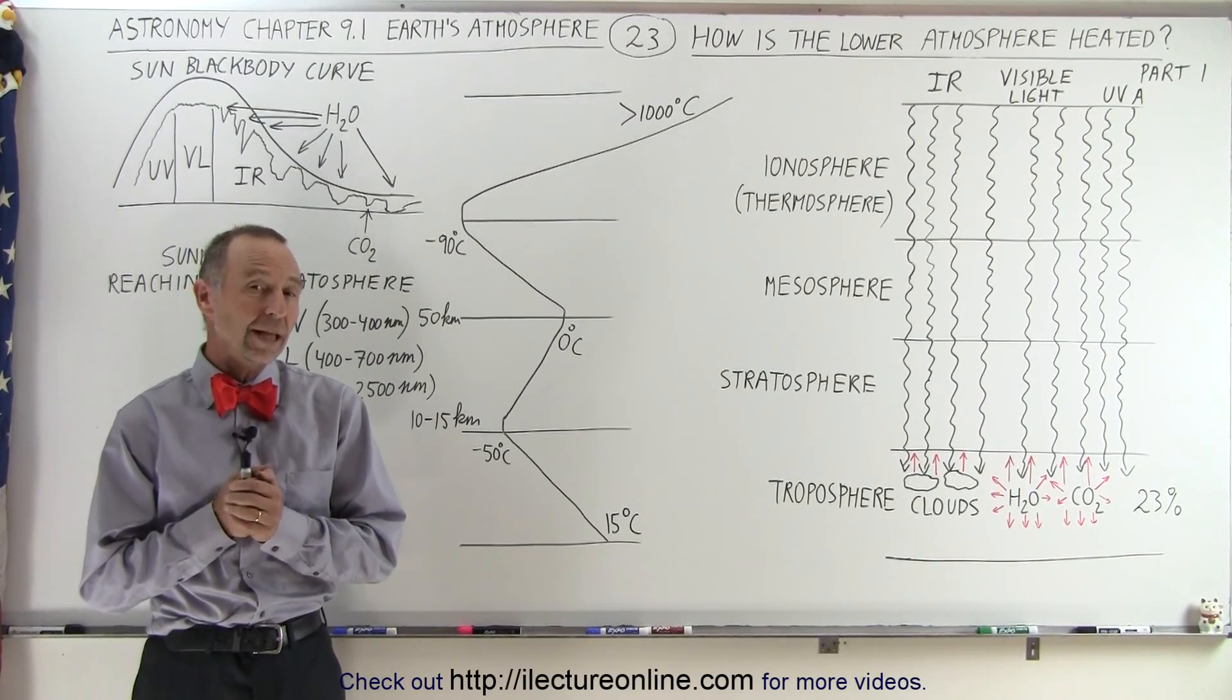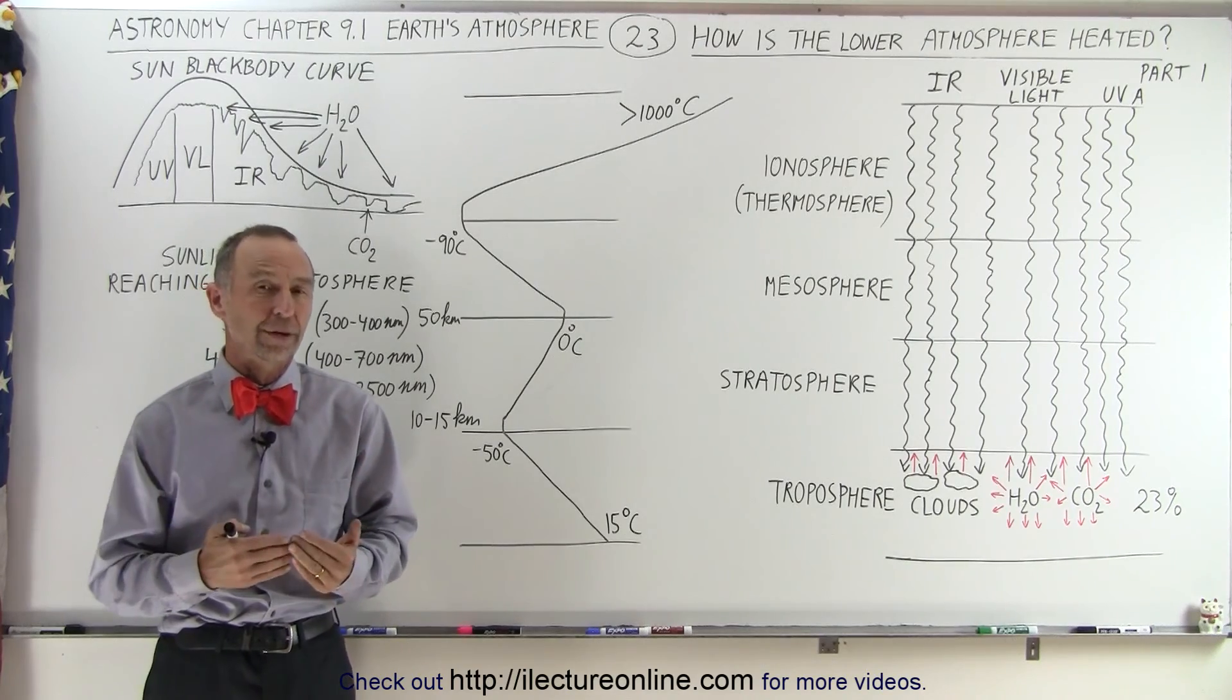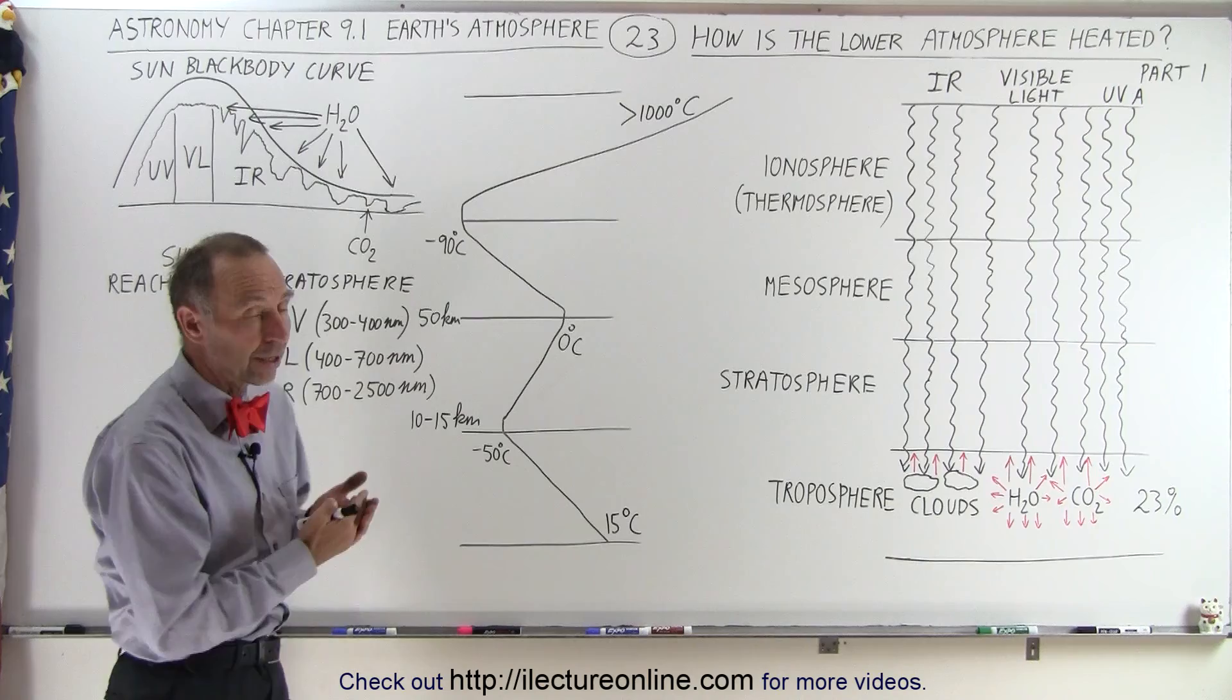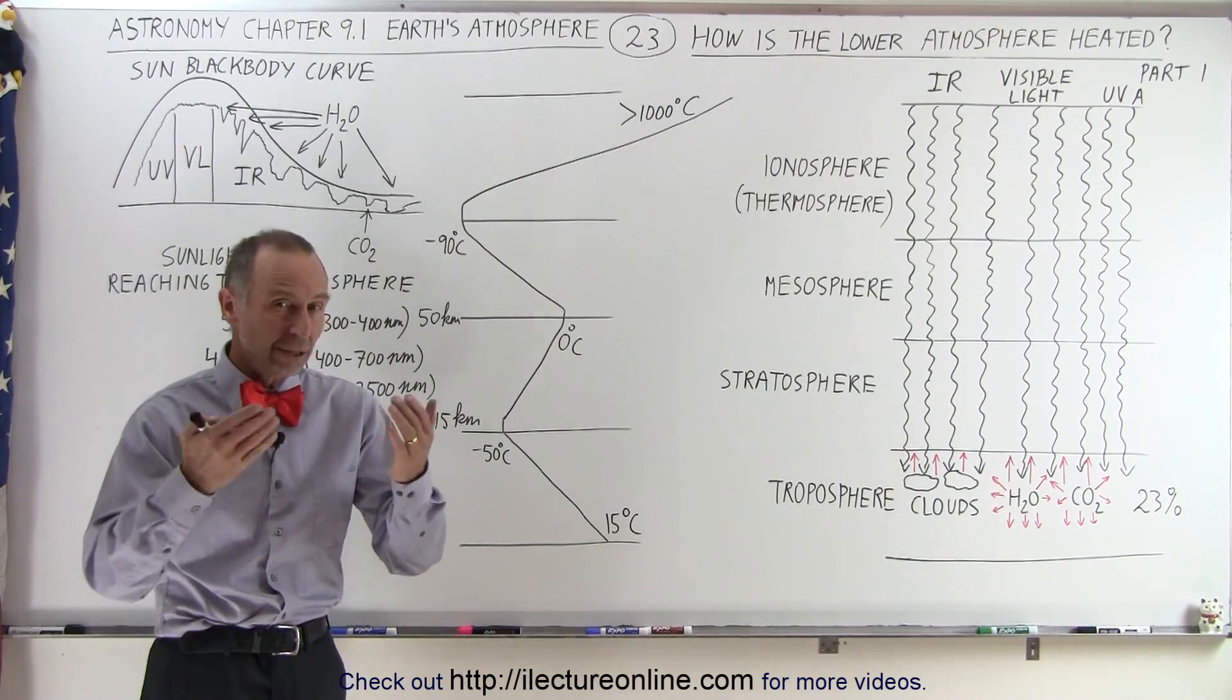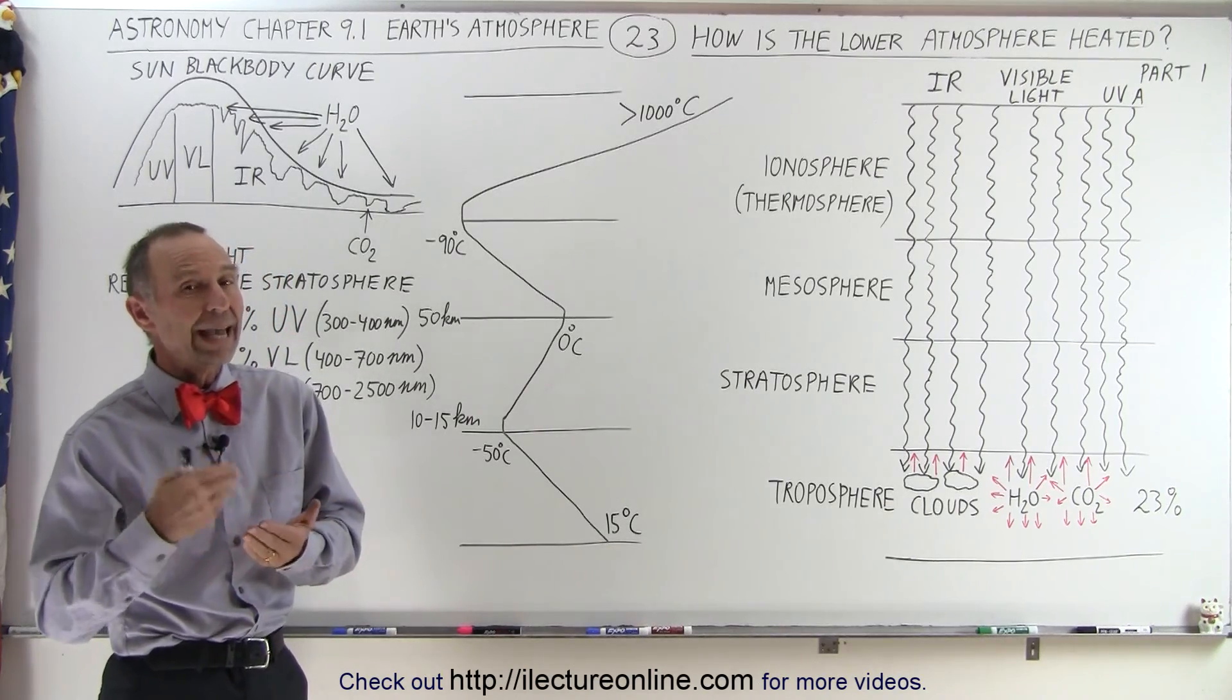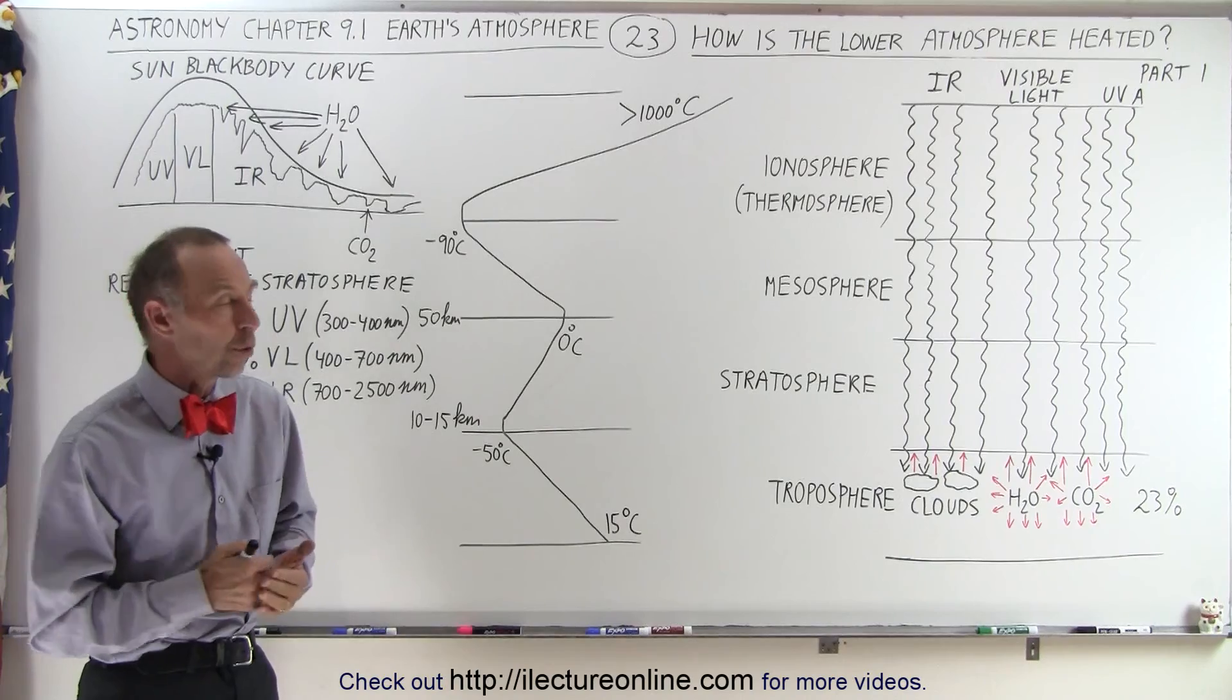Welcome to Electron Line. Now let's take a look and see what radiation makes it all the way down to the troposphere. It turns out that much of the visible light and a lot of the infrared radiation that comes from the sun makes it all the way down to the troposphere, including UVA, the lower energy UV radiation that makes it past the ozone layer.